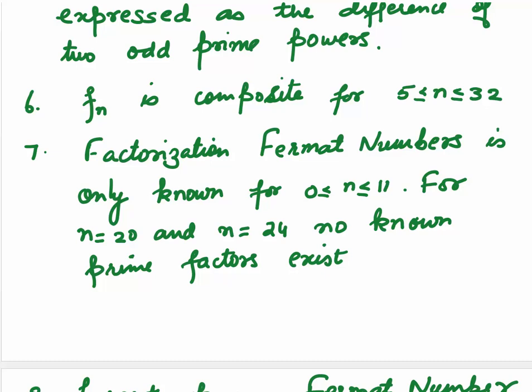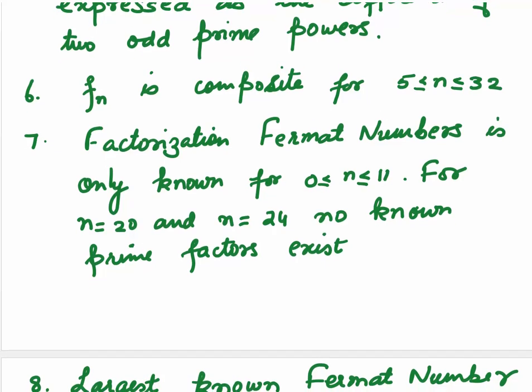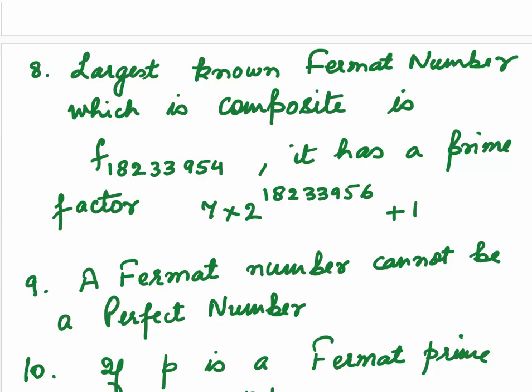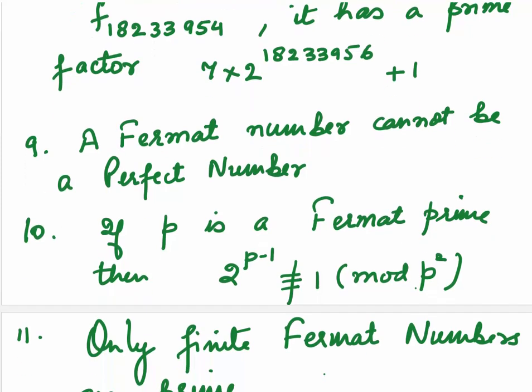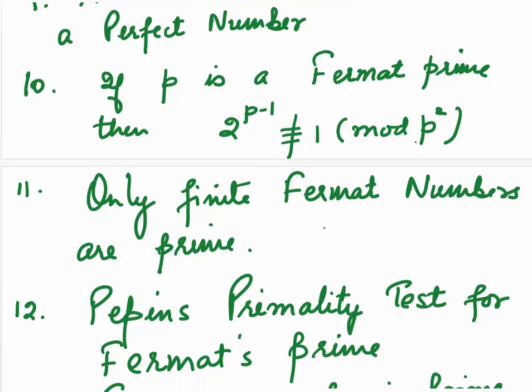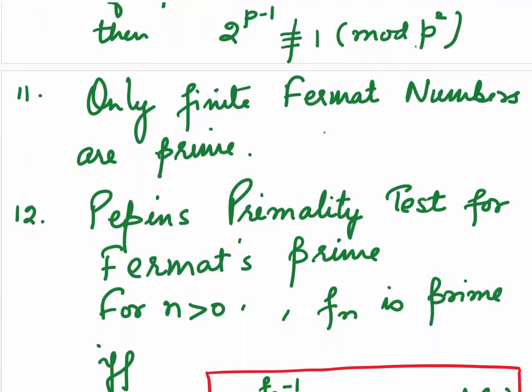It has already been checked. There are no prime factors. Eighth point. The largest known Fermat number which is composite is F18233954. It has a prime factor 7 into 2 to the power number 18233956 plus 1. Ninth point. A Fermat number cannot be a perfect number. Tenth, if P is a Fermat prime, then 2 to the power P minus 1 will never be congruent to 1 mod P square. Eleventh point. Only finite Fermat numbers are prime.